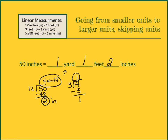I can always check my work by changing it all back into inches. If I have 1 yard times 36 inches, that gives me 36 inches. And I have 1 foot, which gives me 12 inches. And then I have my 2 inches left over. If I add them all together, I should get my original number, which was 50 inches.